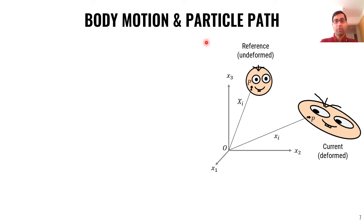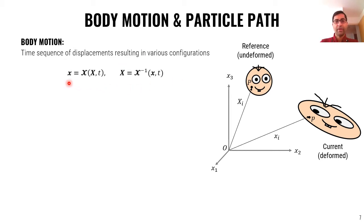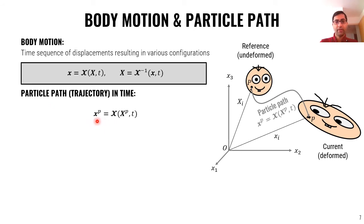Let's talk about body motion and particle path now. Body motion is the time sequence of displacements resulting in various configurations. So, if x is a function of capital X, we can define particle path or particle trajectory in time as this. x of P, the particle path associated with point P can be found based on the same mapping as a function of capital X of P, the initial position of that particle. You see here the particle path, it can have arbitrary shapes and the same equation by replacing T for any time that you want gives you the configuration of the position of that particle at that given time.